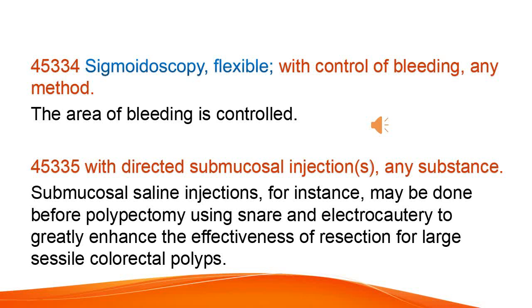Sigmoidoscopy, flexible, with control of bleeding, any method. The area of bleeding is controlled. With directed submucosal injection of any substance — submucosal saline injections, for instance, may be done before polypectomy using snare and electrocautery to greatly enhance the effectiveness of resection for large sessile colorectal polyps.